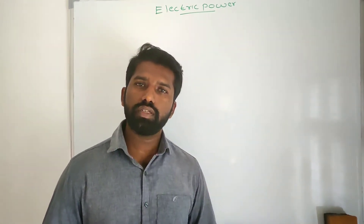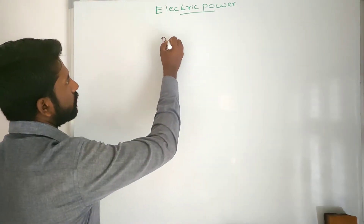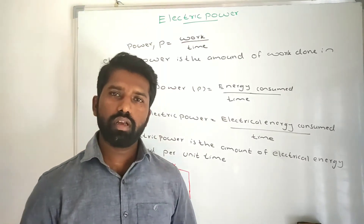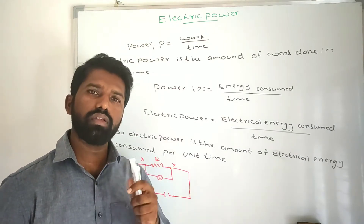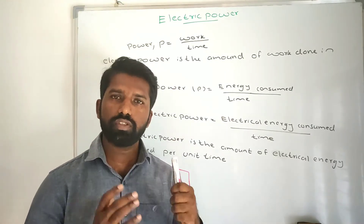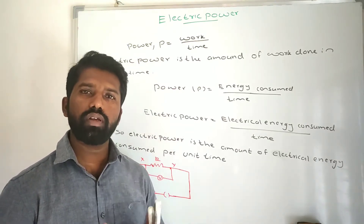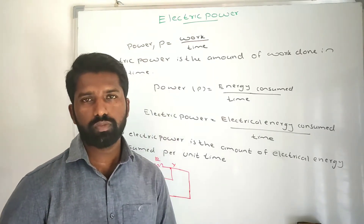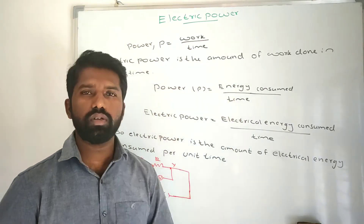So power is the amount of work done per unit time. To do the work, some amount of energy is needed. If you are doing work, after some time you will be tired, because to do the work some amount of energy is consumed. So work done is equal to the energy consumed. From that we can write: power is equal to energy consumed per unit time.